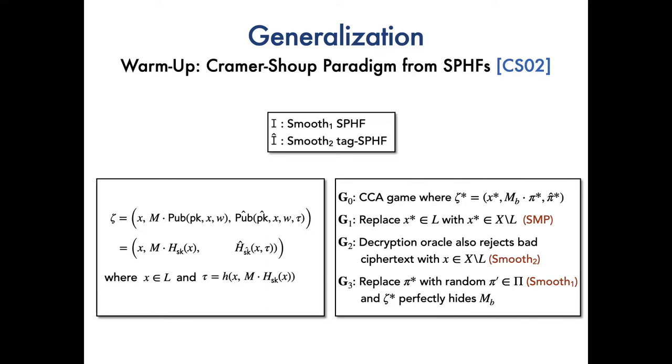To make our later argument easier to follow, below we first provide an overview of justification of CCA security from SPHF. Considering the challenge ciphertext zeta star in the CCA security game, namely game 0. In game 1, due to the hardness of subset membership problem, we can replace the language element X star with non-language element and compute pi star and pi hat star using the hashing key.